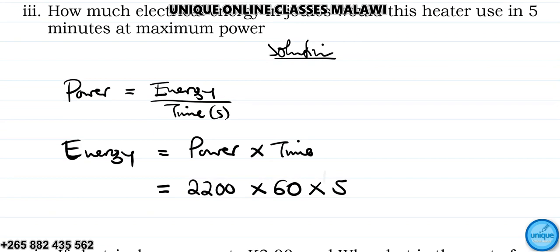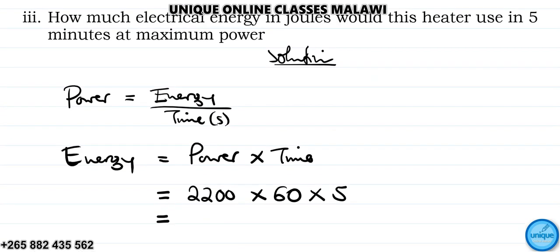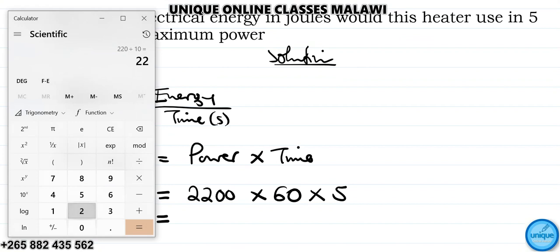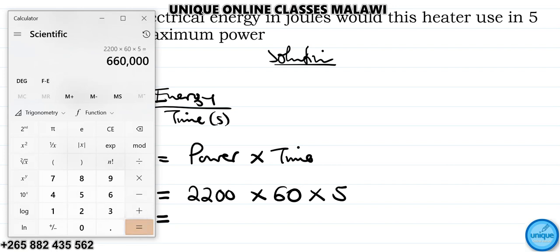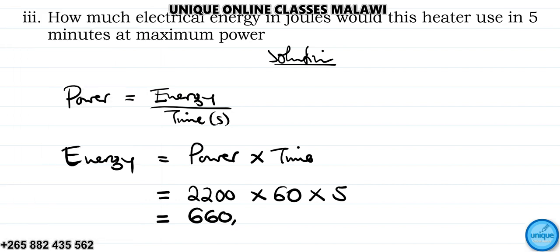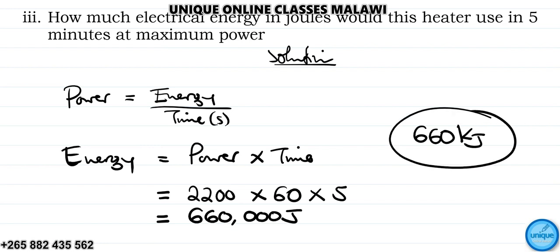There are 60 seconds in a minute and we have five minutes, so time equals 300 seconds. Energy equals power times time: 2,200 watts times 300 seconds equals 660,000 joules, which can also be written as 660 kilojoules.